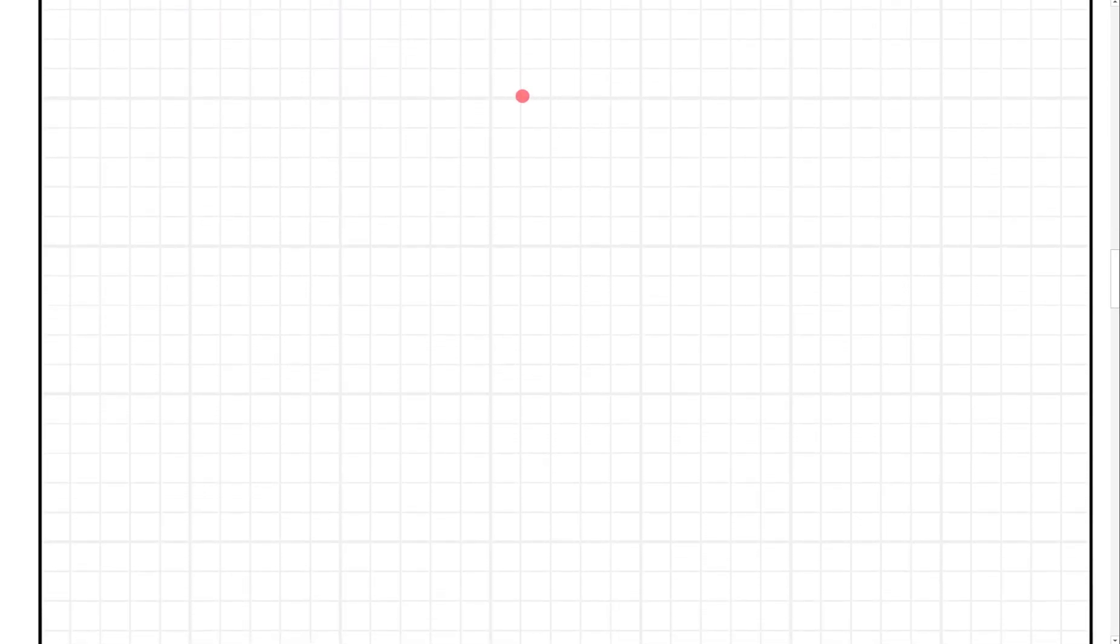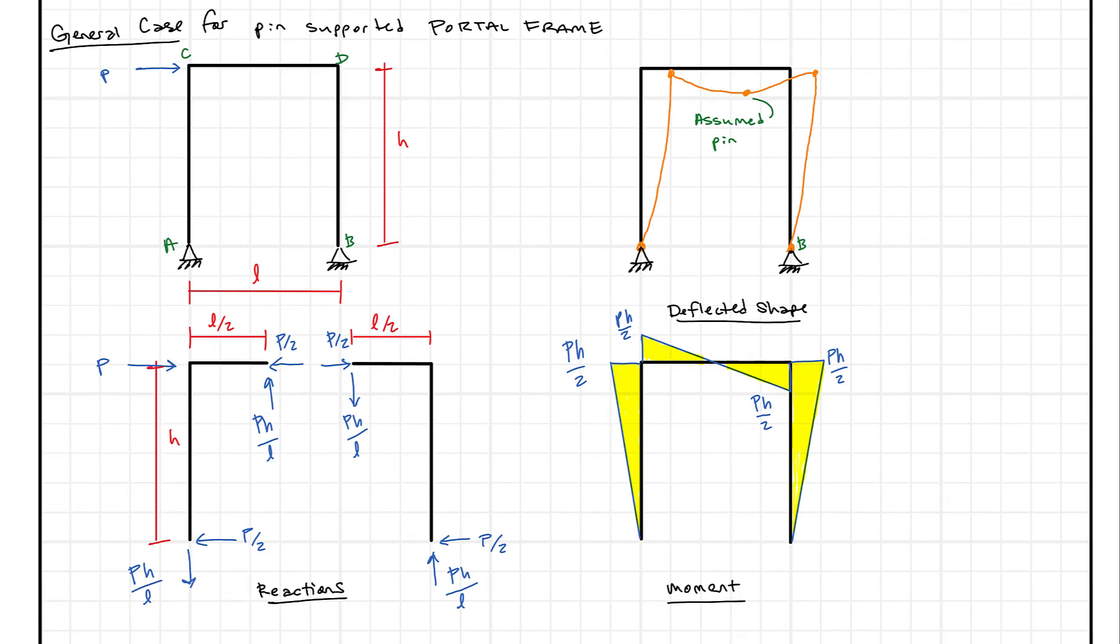So, what I've drawn in here is just the general case for a pin-supported portal frame. And this is the load that you have with a load P, a height H, and a base L. And when we do this out, what we figure out is that these are the different reactions. So, we have pH over L, P over 2, P over 2, pH over L. And we can actually calculate those out. So, when we do that out, what do we get? Well, pH over L, well, in this case, P was 20 kilonewtons, H was 6 meters, and L was 5 meters. So, if we do that, we essentially, 5 goes into 24 times times 6 equals 24 kilonewtons, which matches what was above. So, this is a general case. It's generalized for any load P, any height H, and any length L.